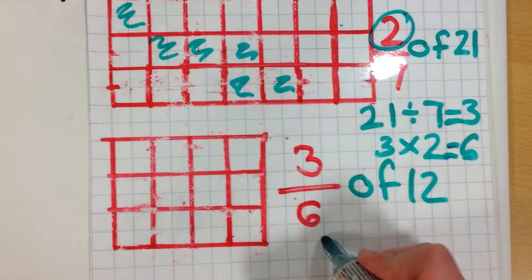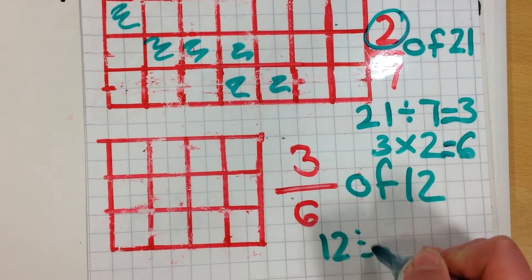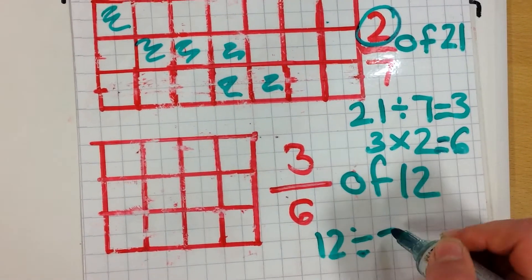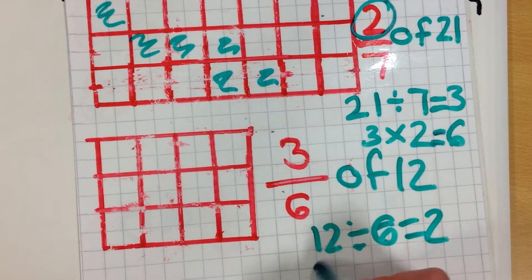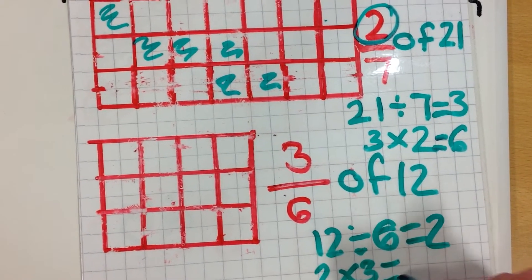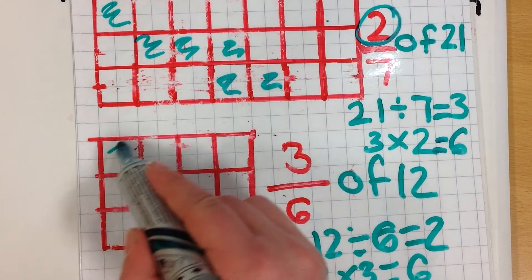So you do 12 divided by 6. Divide by 6 equals 2. And you do 2 times 3, which is 6. So you shade in 6.